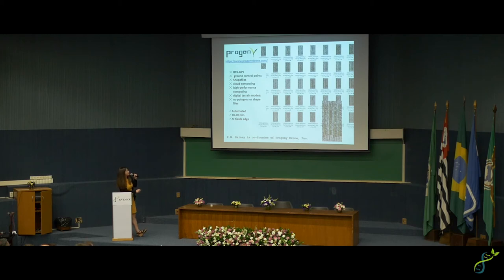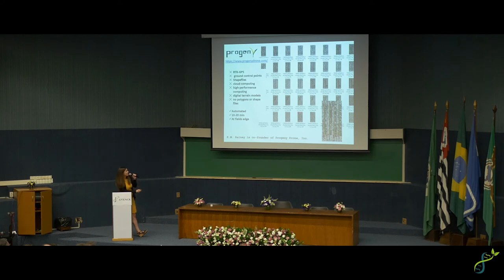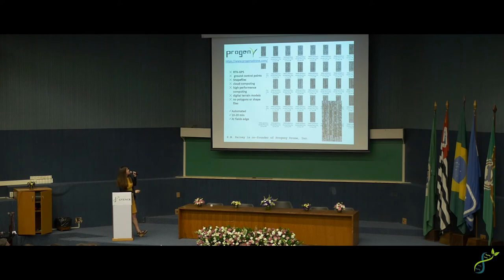The software is a Purdue technology that I have a startup with my student to commercialize. It outputs clips labeled by range, row, sampling date, drone platform, and whatever metadata you want. The advantage is you don't need expensive GPS, ground control points, or shape files, and there are no digital terrain models required. The whole thing is automated and works in 10 to 20 minutes for three or four hectares of plot imagery at the edge of the field — edge computing, free from the cloud.